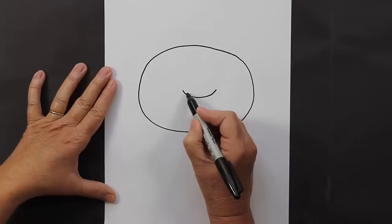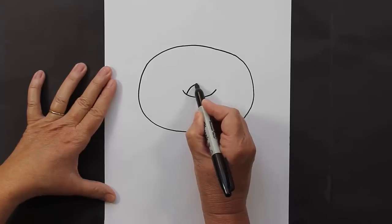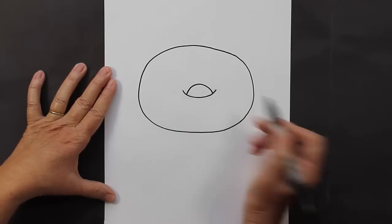On top of this curved line, you are going to make another curved line, but you're going to let the edges of your first curved line stick out a little bit.